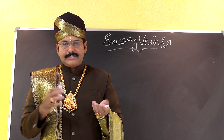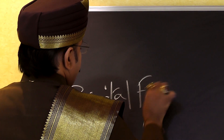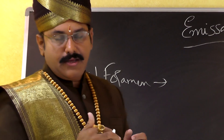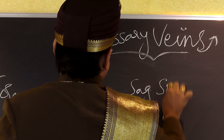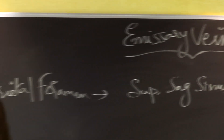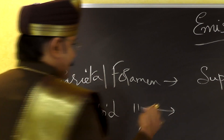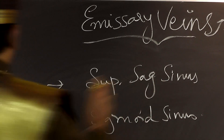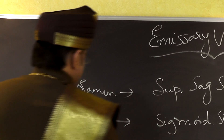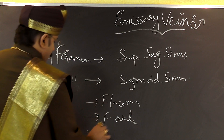Emissary veins also equalize pressure in the veins. For example, through the parietal foramina passes one emissary vein — the parietal emissary vein — which opens into the superior sagittal sinus. Through the mastoid foramina passes another emissary vein which opens into the sigmoid sinus. There are also emissary veins in the foramen lacerum, foramen ovale, and foramen cecum.